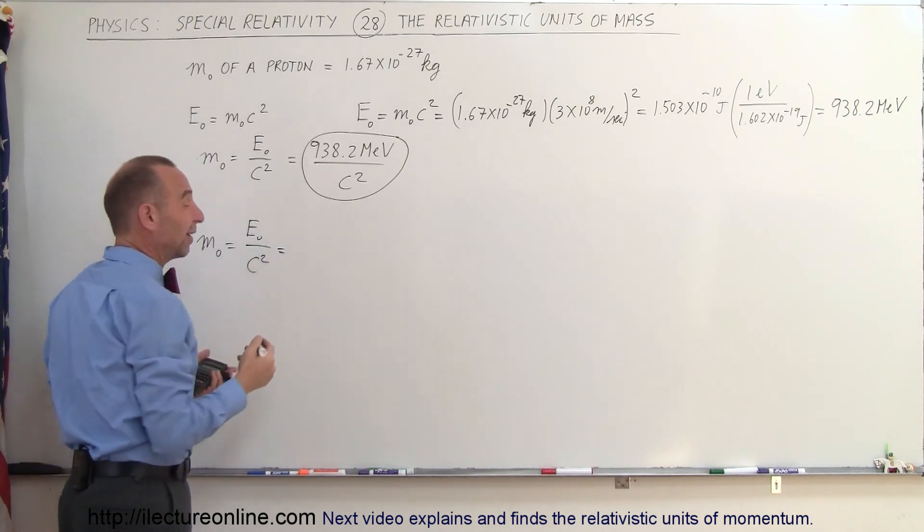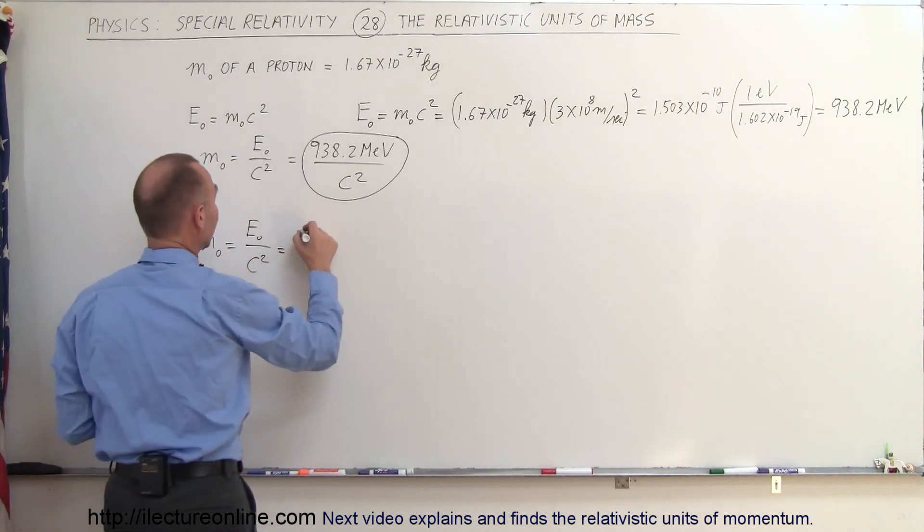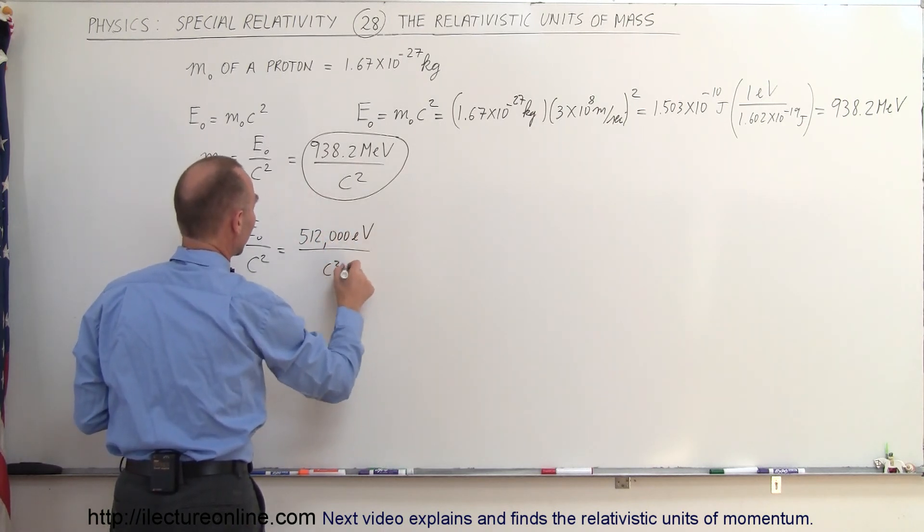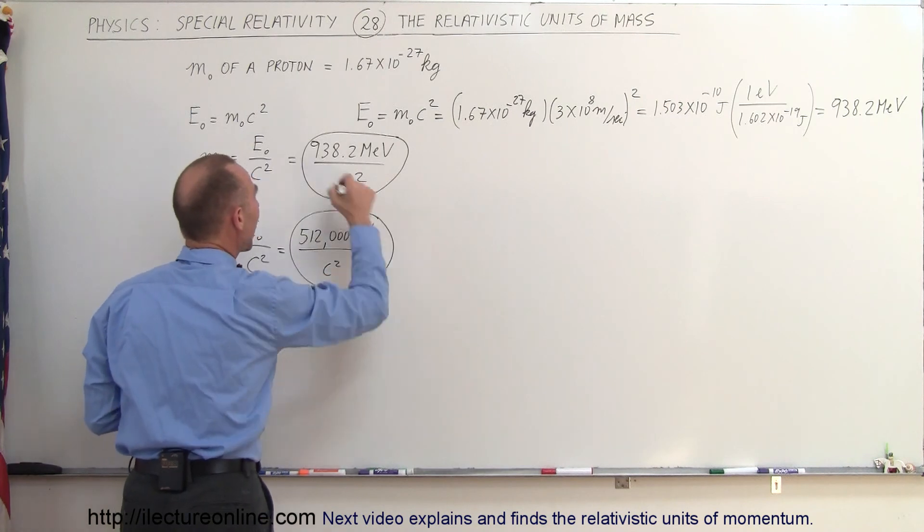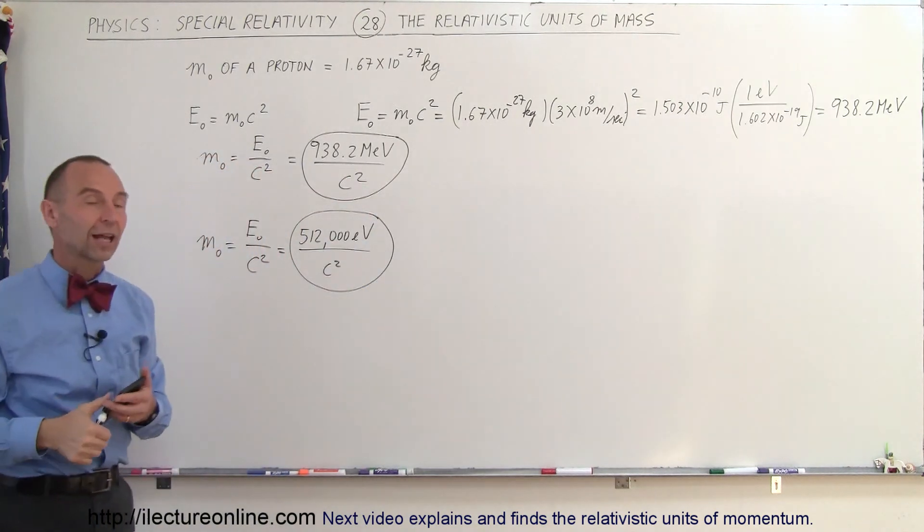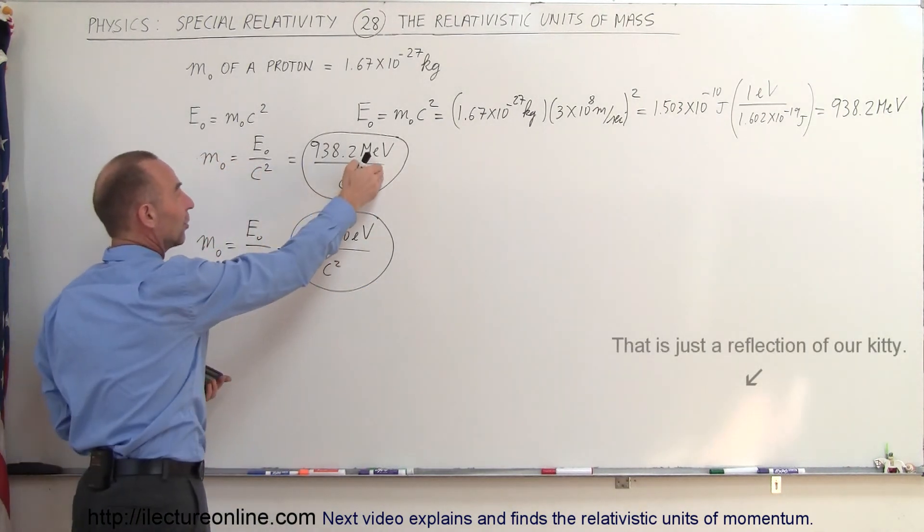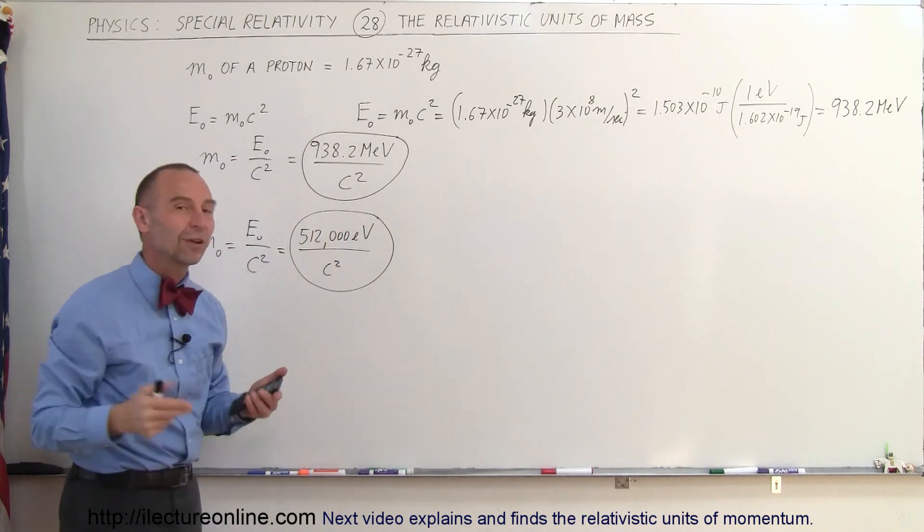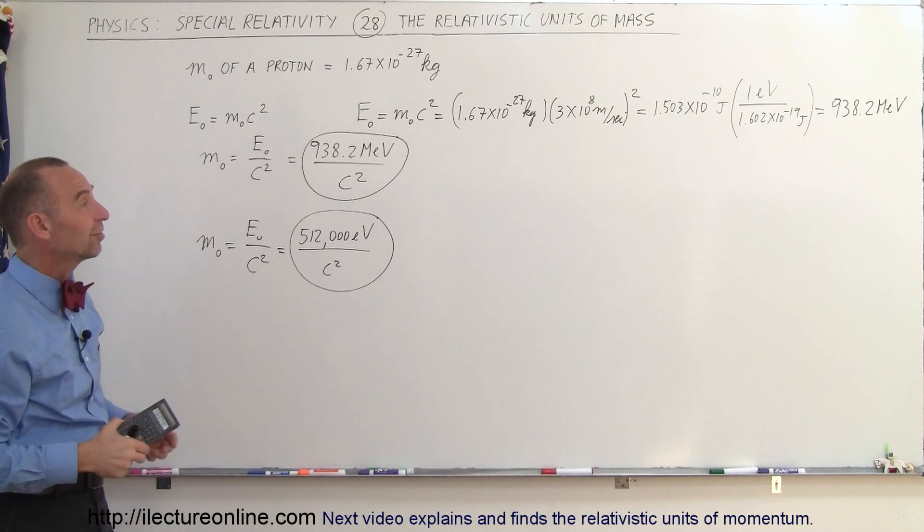And the energy, the rest mass energy of an electron, is equal to 512,000 electron volts. And we divide that by C squared, and this would then be the mass of an electron. So this is the mass of a proton, and this is the mass of an electron. And it's written in terms of the rest mass energy divided by C squared.